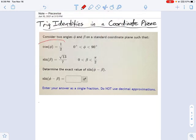We're told that cosine of phi equals one-half. We're also told that sine of beta equals radical 13 over 7. But if you remember, how do we find sine of an angle minus another angle?